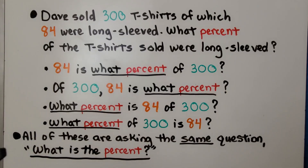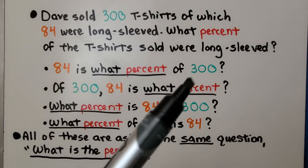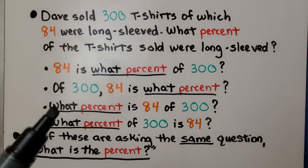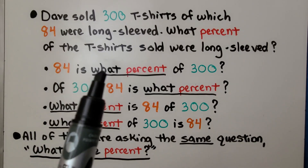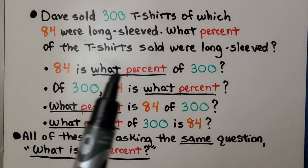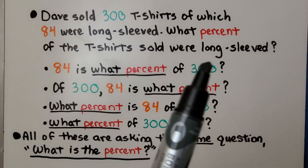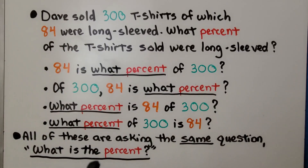All of these are asking the same question: what is the percent? They're giving us the part and the whole and asking what percent. It may be asked in different ways, but if you have a sharp eye, you'll be able to see that it says 'what percent.' So you know you're looking for the percent. We have our whole, we have our part, and we have enough to use proportional reasoning to find the percent.